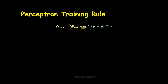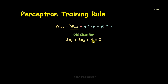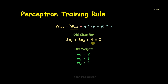We have w_new equals w_old plus delta W, and instead of delta W we can write that full expression. Let's look at w_old first. Say we have the old classifier equation: 2x1 + 3x2 + 4 = 0, where 2 and 3 are weights associated with the variables and 4 is the bias weight. x1 and x2 are the feature inputs, so the old weights are w1=2, w2=3, and w0=4, where w0 is the bias weight associated with x0, always initialized to 1.